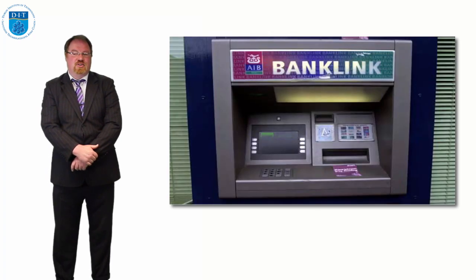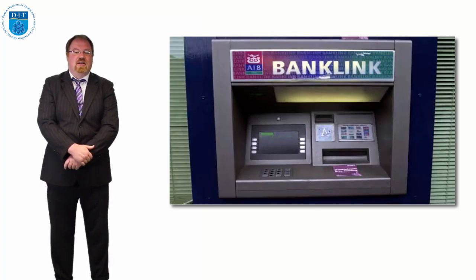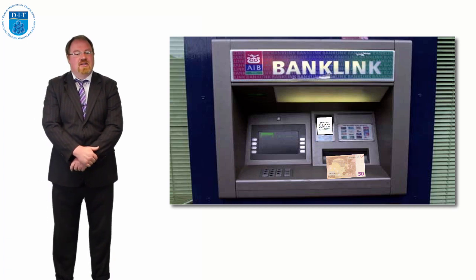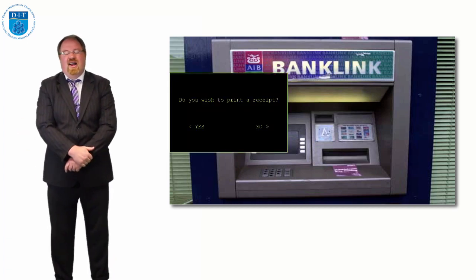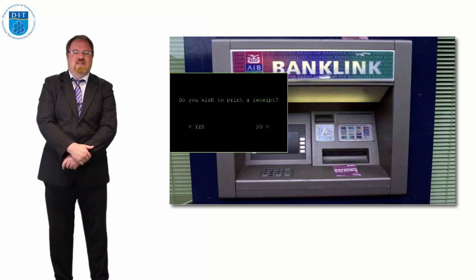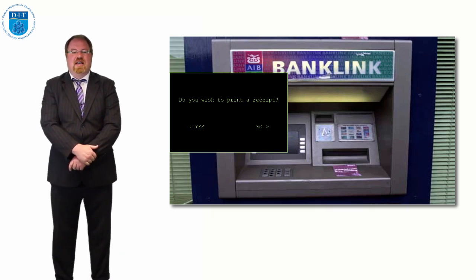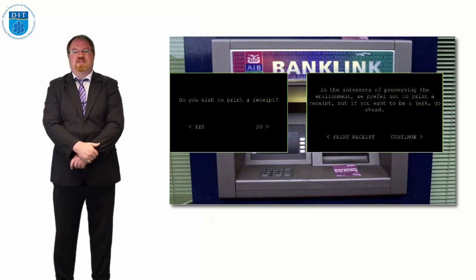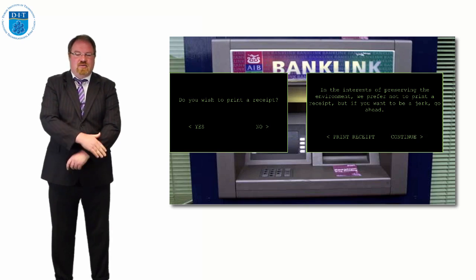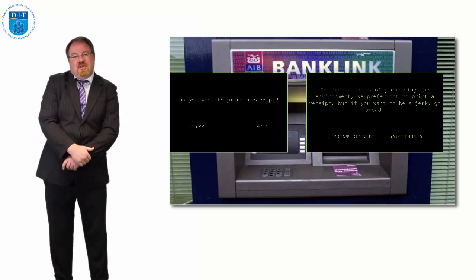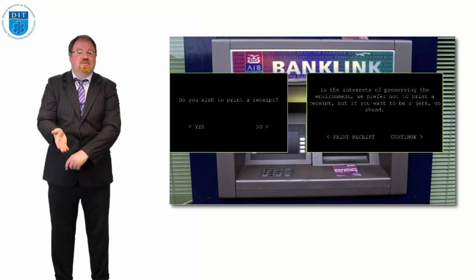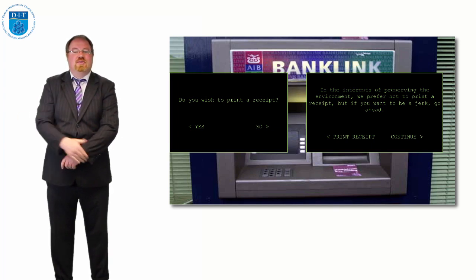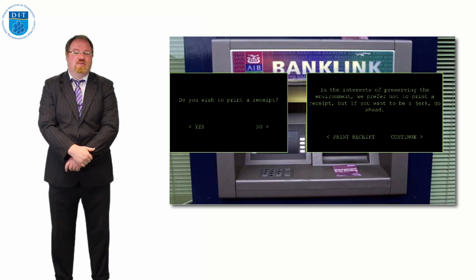So let's say we have an ATM machine or a pass machine — we know it gives us cash and we know it gives us a receipt. Sometimes we're asked: do we wish to print the receipt, yes or no? Sometimes the machines say instead, in the interest of preserving the environment, would you like to print a receipt or continue? But that's the same option — do you want to print a receipt or continue? Continue is the same as no.